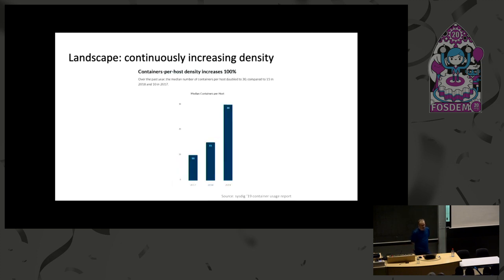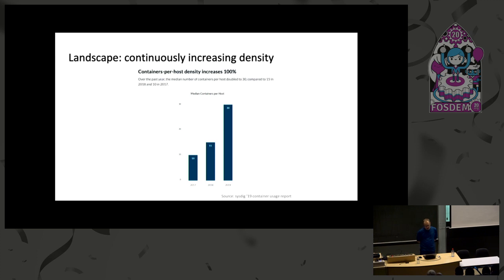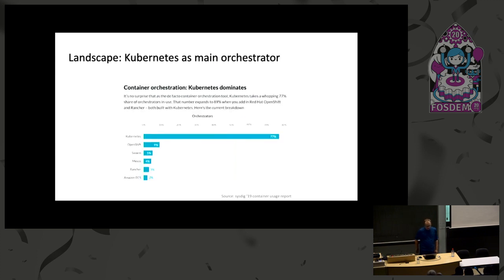The other thing is how many containers are running on one single node, and that number has also doubled from last year — now it seems to be 30 as a median. And the last one, I guess it's pretty obvious, but the main orchestrator if you deploy containers is Kubernetes.